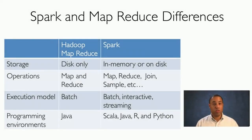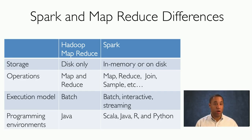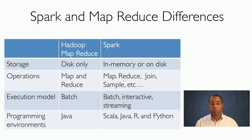In MapReduce, your only option for storage is disk; in Spark, it supports both in-memory and on-disk storage. In terms of operations, MapReduce only supports map and reduce, whereas Spark supports map, reduce, join, sample, and many other operations. The execution model for MapReduce is limited to batch, whereas Spark supports batch, interactive, and streaming. In terms of programming environments, MapReduce only supports Java, whereas Spark supports Scala, Java, R, and Python.